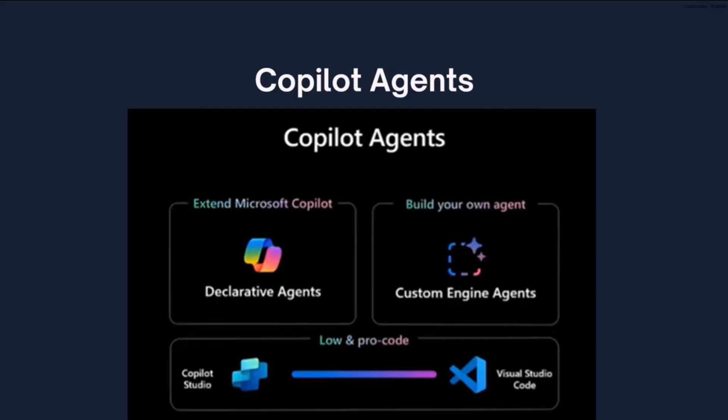That more flexible option is called custom engine agents. There are two ways to create those agents: you can use low-code or no-code with Copilot Studio, or you can use Visual Studio Code where you have more room for your own code implementations. Today I'm going to focus on creating agents with Visual Studio Code, not the Copilot Studio version.